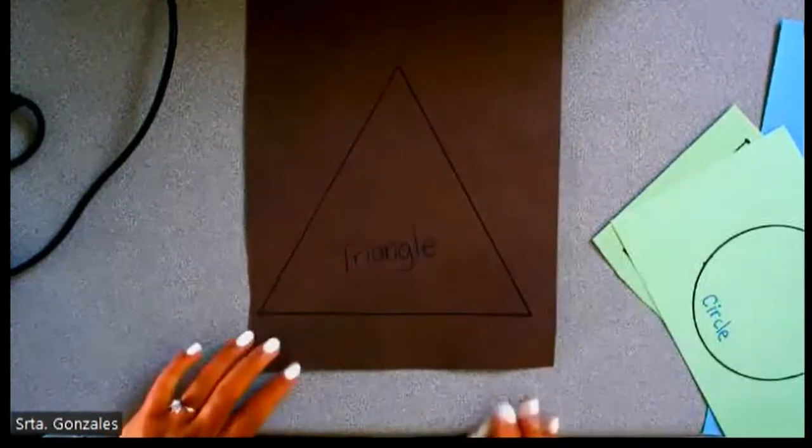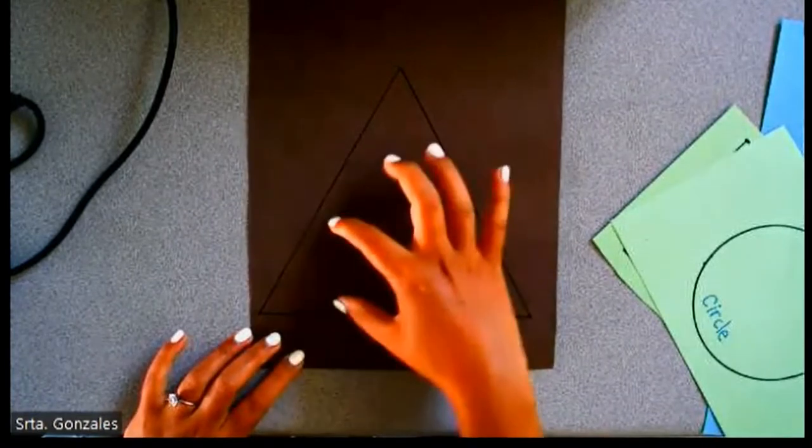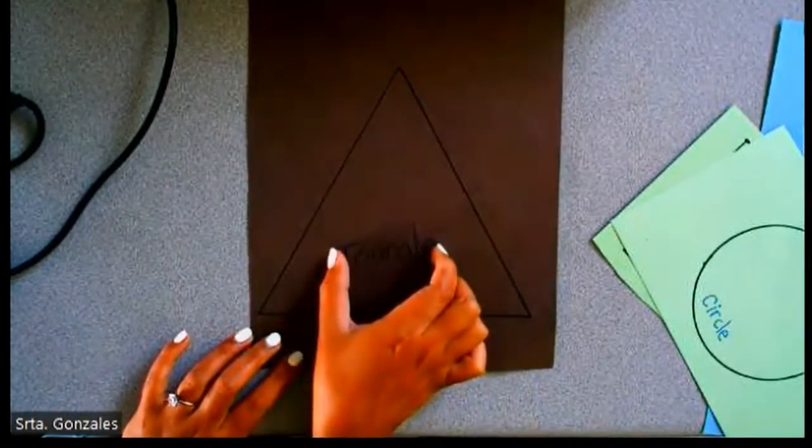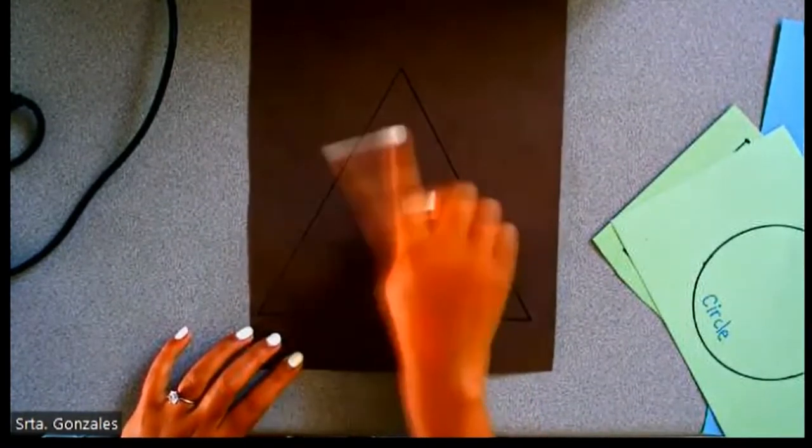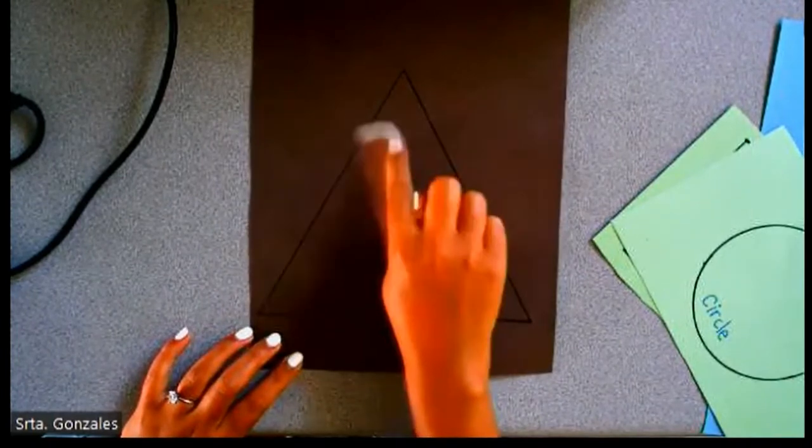First, write the word triangle in the middle at the bottom, really big. Do not write on top of the triangle.